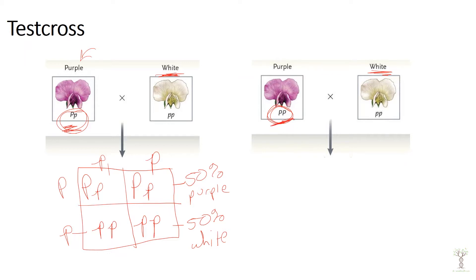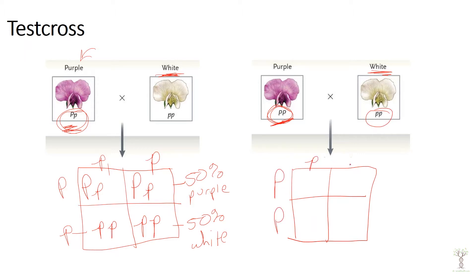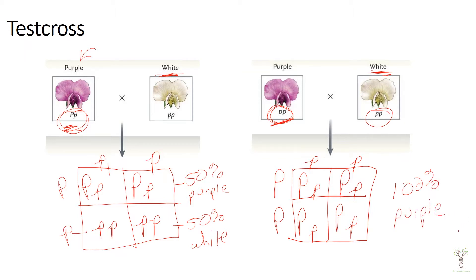If the parent pea plant is homozygous dominant and you cross it with a homozygous recessive, all of the offspring will end up being heterozygous, so all offspring will be purple. Therefore, if you cross a purple pea plant with a homozygous recessive plant and get some white offspring, the parent had to be heterozygous. If all offspring are purple, the parent had to be homozygous dominant.